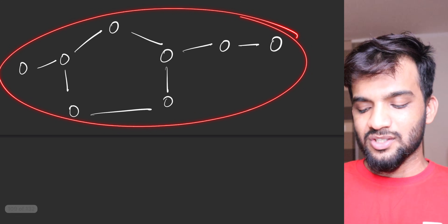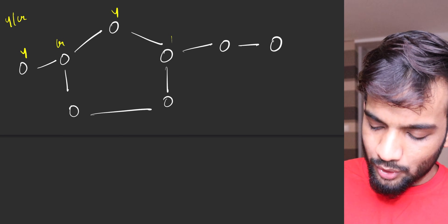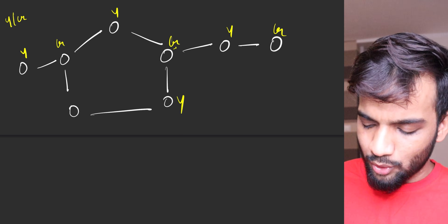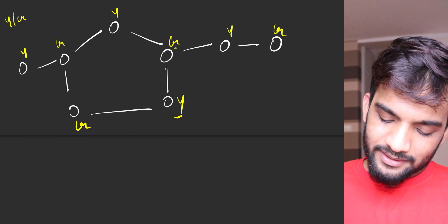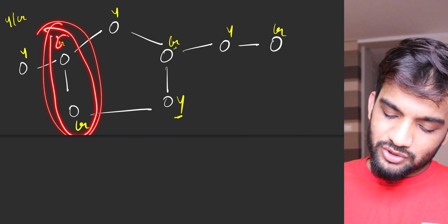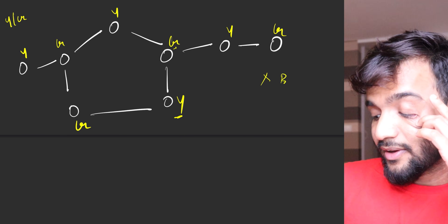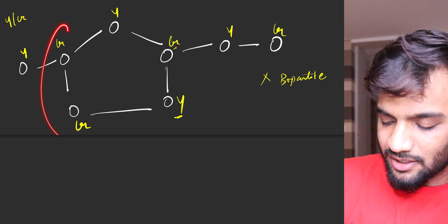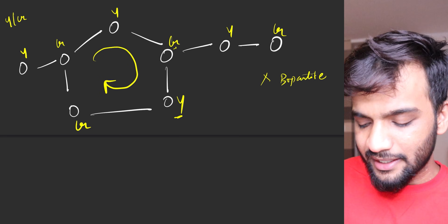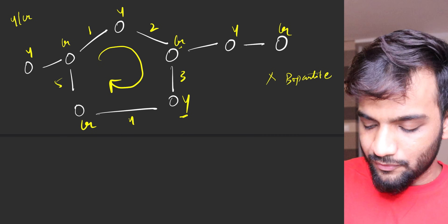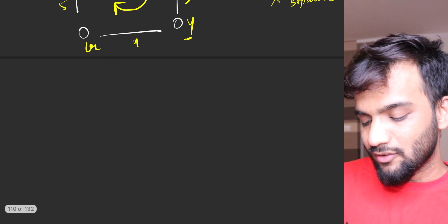Now if I check this other graph with the same colors yellow and green - yellow, then green, yellow, green, yellow, green - but if you see, these two adjacent nodes end up having green color. This graph cannot be colored with two colors because you will end up with adjacent nodes sharing the same color. The reason is very simple: it has an odd-length cycle - one, two, three, four, five - the length is odd.